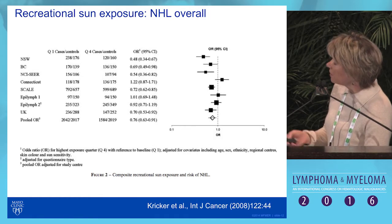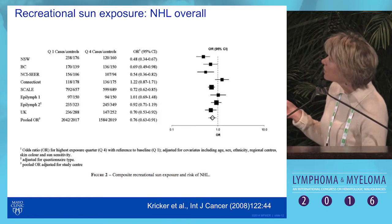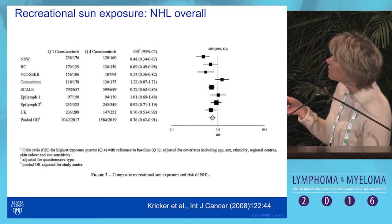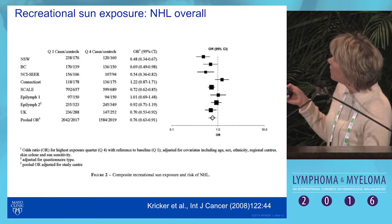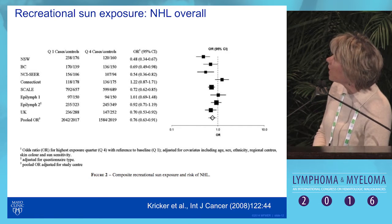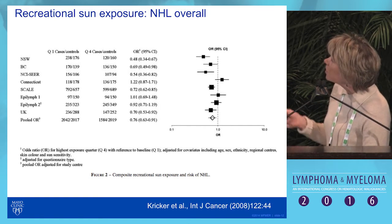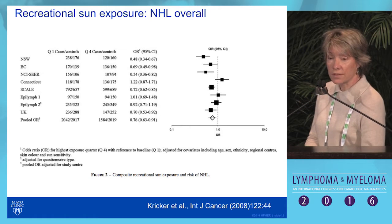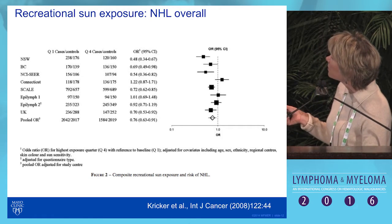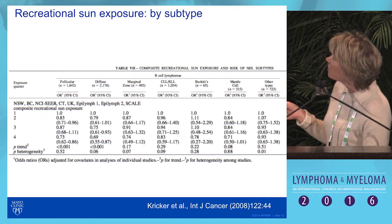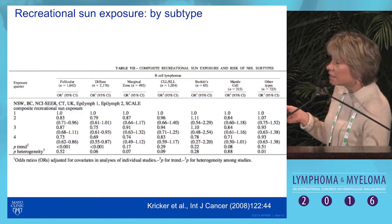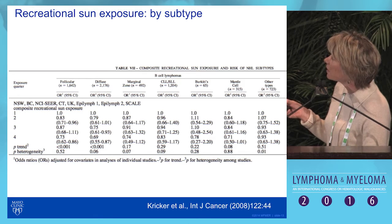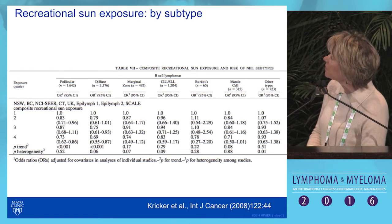For recreational sun exposure — self-reported by study participants — you again see a consistent pattern across studies showing an inverse association, with an overall effect size of 0.76. For CLL/SLL specifically, increased sun exposure is associated with a decreased risk of CLL.